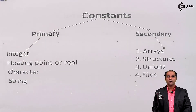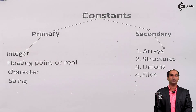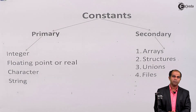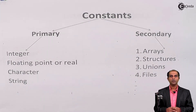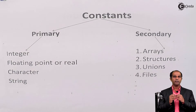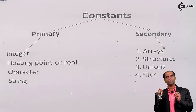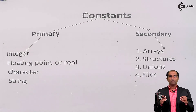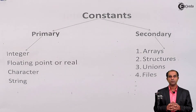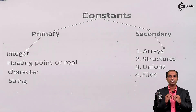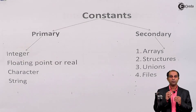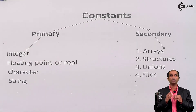When I say constant, whenever we write any mathematical expression, we definitely come across constants. If I write a mathematical expression like x plus y equals to 20, then 20 is said to be a constant whereas x and y are called variables. If I rewrite it as x plus y equals to 20.0, for us there may be no difference, but C language will definitely identify these two as separate constants. 20 is identified as an integer constant and 20.0 is identified as a floating or real constant.